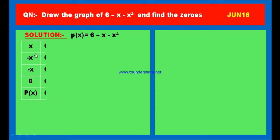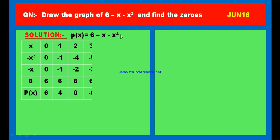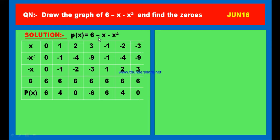The table has columns for x, minus x squared, minus x, and plus 6. Note that the sign of x squared is minus, so the first term is minus x squared; the sign of x is minus, so the second term is minus x; and the constant is plus 6. Substitute x equals 0: minus 0 squared is 0, minus 0 is 0, plus 6 is 6. Sum is 6. First point: (0, 6).